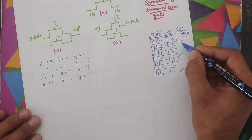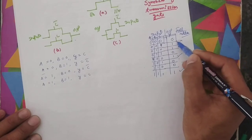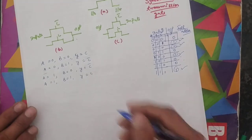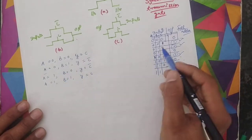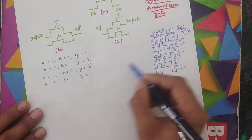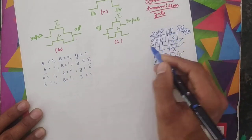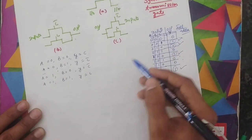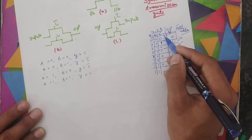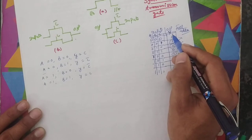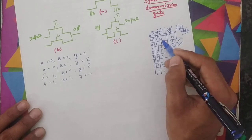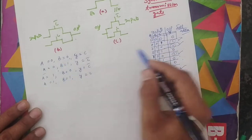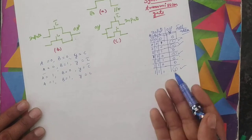We only take the values where the output is 1. I have already written the equation for sum here. We take the output as Y and the inputs as A, B, and C. We take C as the output we compare with Y, so Y is taken as C. We take only two inputs A and B, and C is also taken as input but in the form of Y.